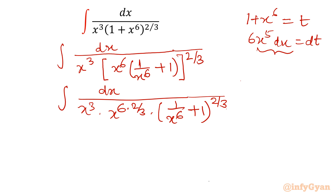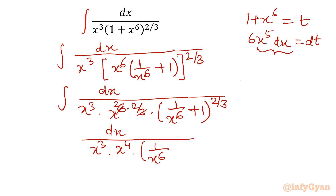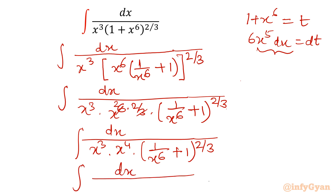Now the x⁶ to the power 2/3 term will get cancelled out, so x⁶·(²/³) gives x⁴. We have dx over x³ times x⁴ times (1/x⁶ + 1) whole power 2/3. It is now easily visible: combining x³ and x⁴ in the denominator gives x⁷, and in the bracket we have (1/x⁶ + 1) whole power 2/3.